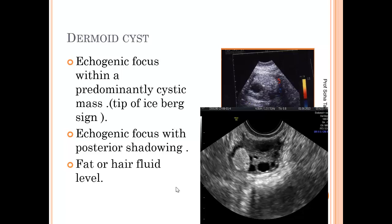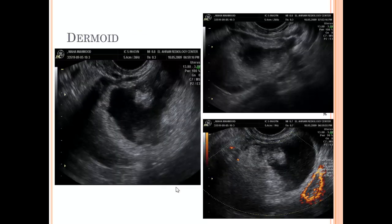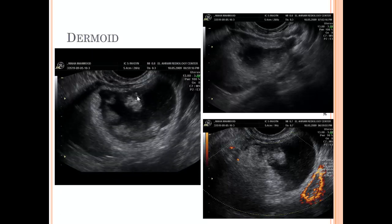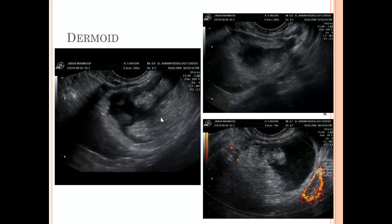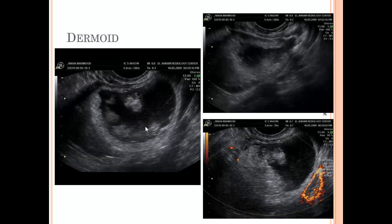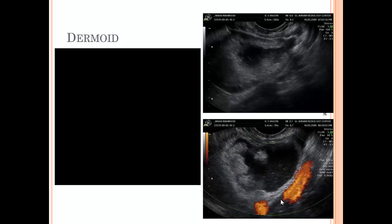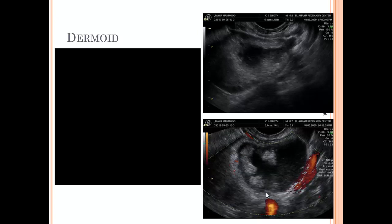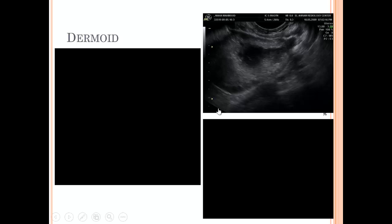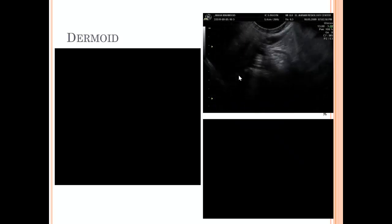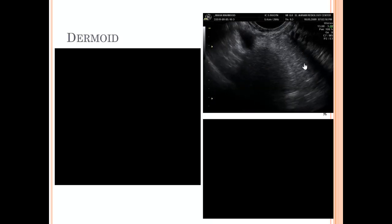Here is another case of teratoma showing the thick wall, echogenic floating parts within the cyst, and many echogenic floating particles. The rest of the cyst shows fine echoes. On color Doppler, the thick echogenic wall and echogenic particles inside are completely avascular. Note bilaterality — this is one on the left side, this is the uterus, and another one on the right side. This is the tip of iceberg sign, sometimes also called the ghost shadow.